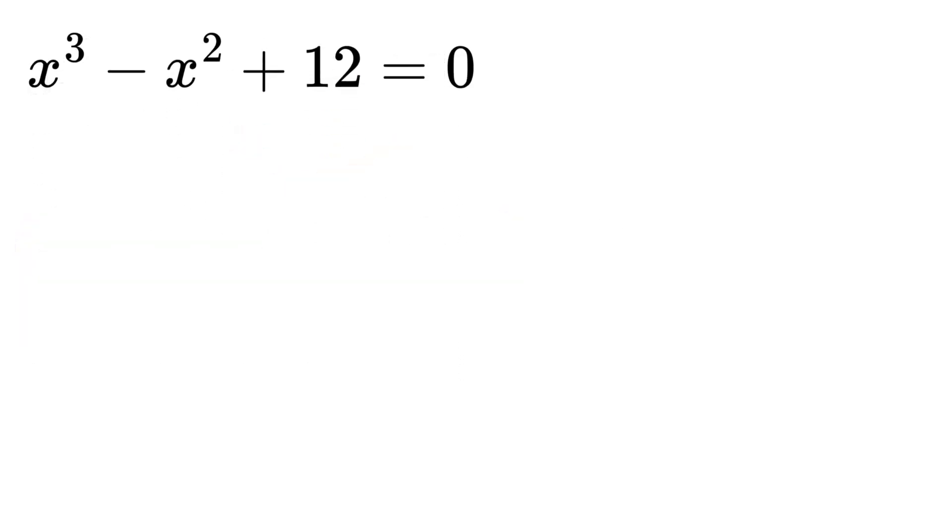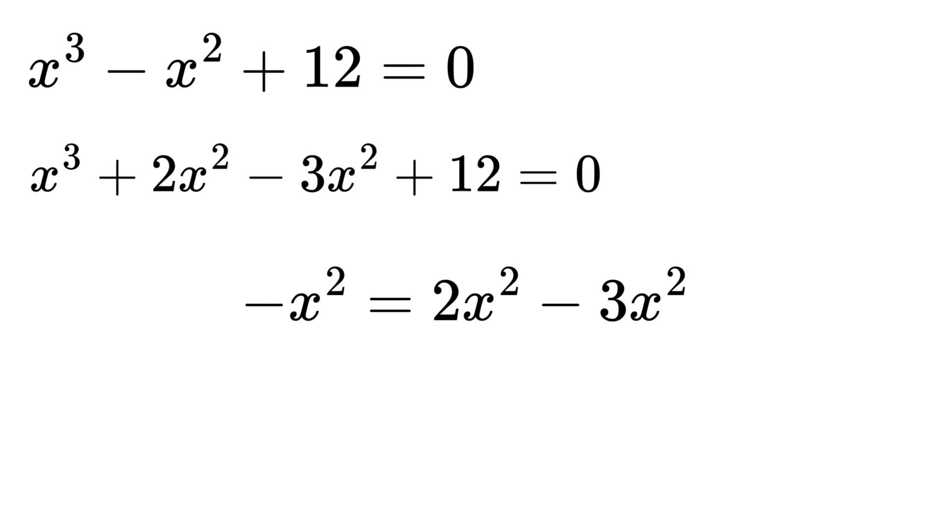Now, because one of the root is negative 2, and thus, we will factorize it using x plus 2. To do that, we can write minus x squared as 2x squared minus 3x squared, because 2 minus 3 is minus 1. So, rewrite this as x cubed plus 2 times x squared minus 3 times x squared plus 12 equals 0.